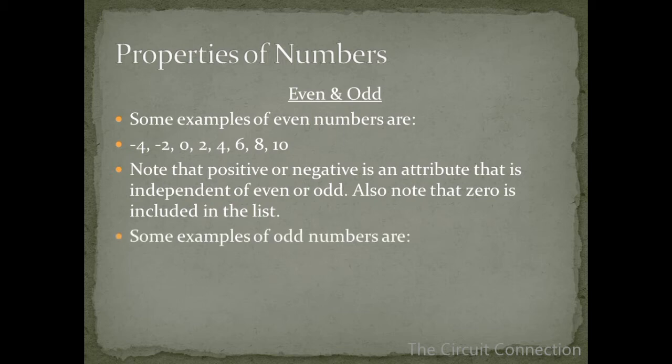Some examples of odd numbers are negative 3, negative 1, 1, 3, 5, 7, 9, and 11.